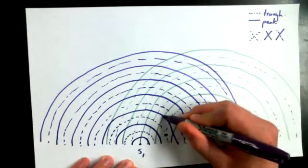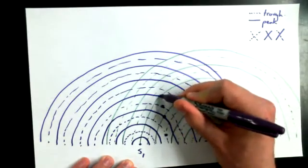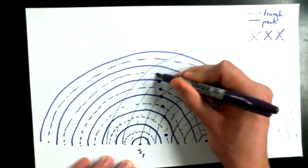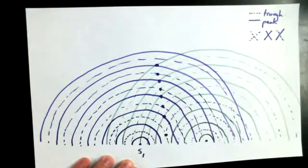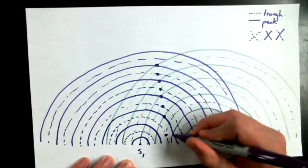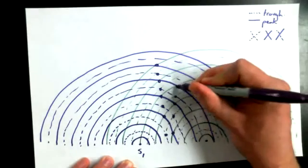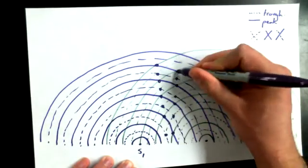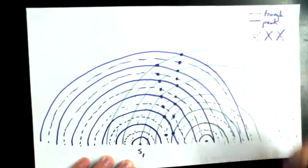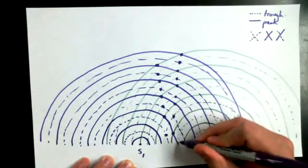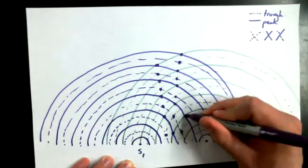Here's a trough-trough, peak-peak, trough-trough, peak-peak. I'm going to keep on doing that, marking where peaks overlap with peaks and troughs overlap with troughs throughout the diagram.